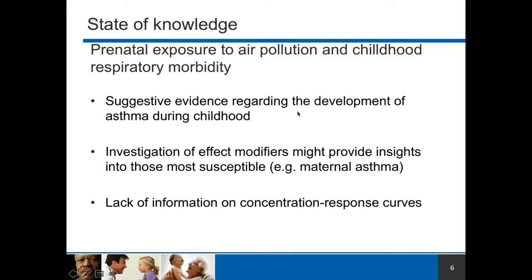There is suggestive evidence regarding the development of asthma during childhood. Research done in Canada — in BC and the province of Quebec — has shown that early life exposure as well as prenatal exposure to air pollution could lead to the development of asthma during childhood. One issue, and that's sort of why this study has been done, is the investigation of effect modifiers in this association: are there any susceptible groups that are mostly affected by the exposure to air pollution on childhood asthma development?